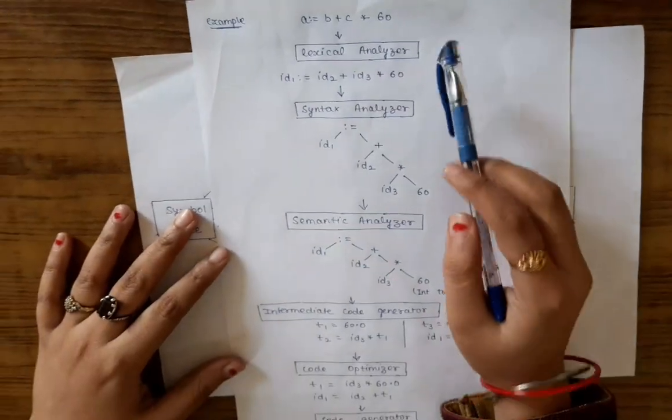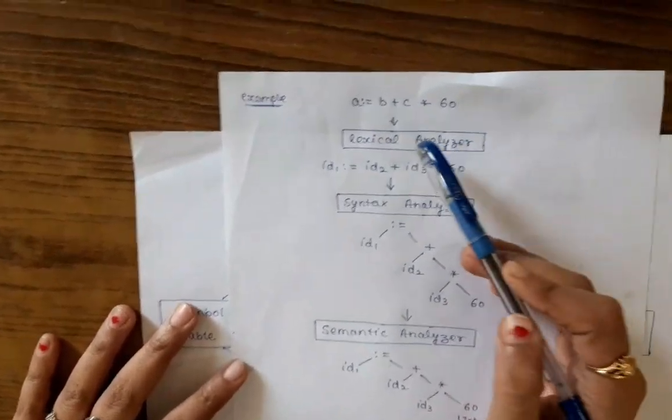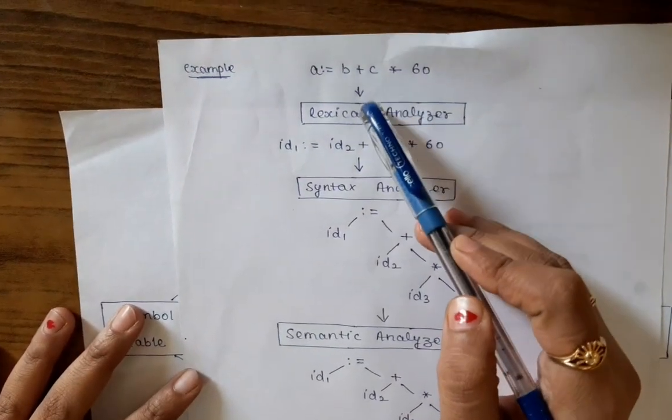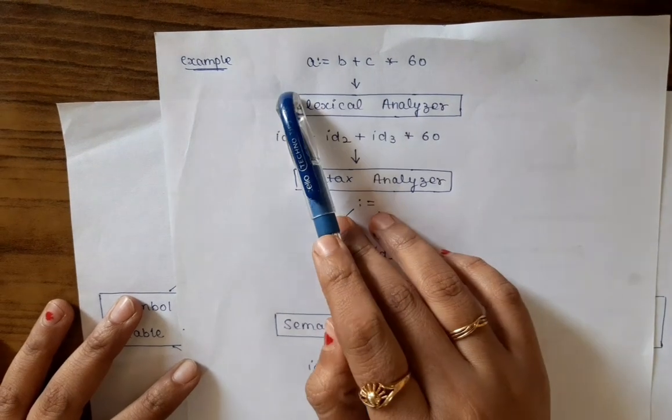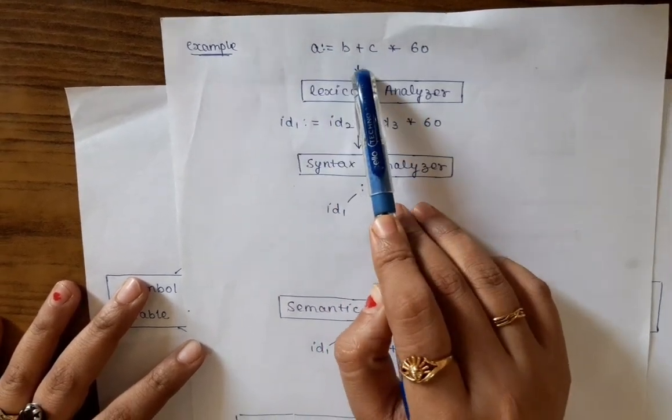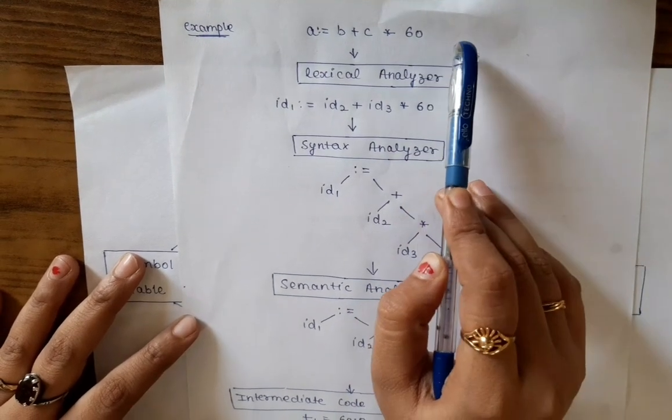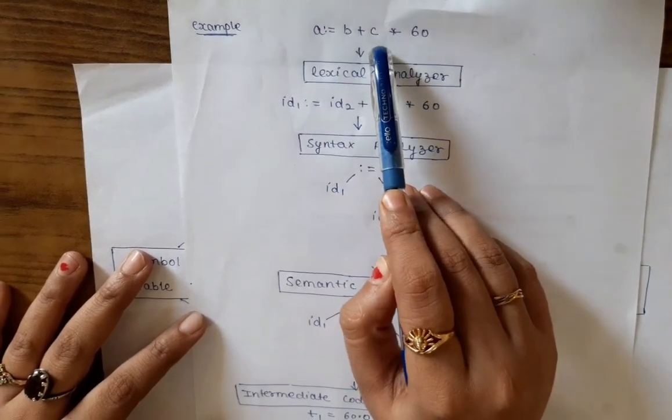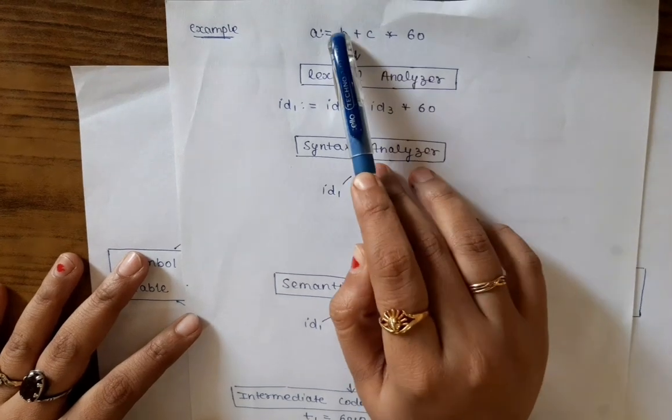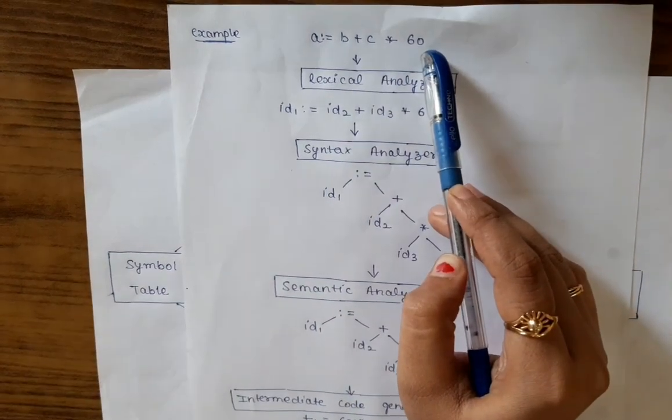Now let's explain each and every phase with the help of an example. Lexical analyzer takes input as the source code. Here in our example, our code is A equals B plus C multiply by 60. Let us assume that A, B and C are real values whereas 60 is an integer value.